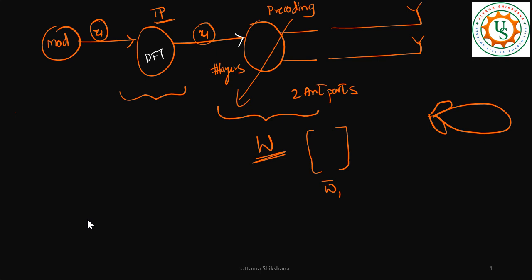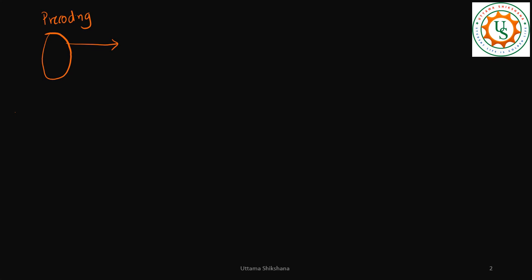One more aspect is that the output of pre-coding — signals X1 and X2 — are further processed and sent to the physical antennas. We need to understand some of the blocks present at this stage. Let me draw the diagram here. This is the pre-coding block. Even though we have two antenna ports, I will consider only one antenna port for now. So we have X1 and X2, and X1 is in the discrete domain.